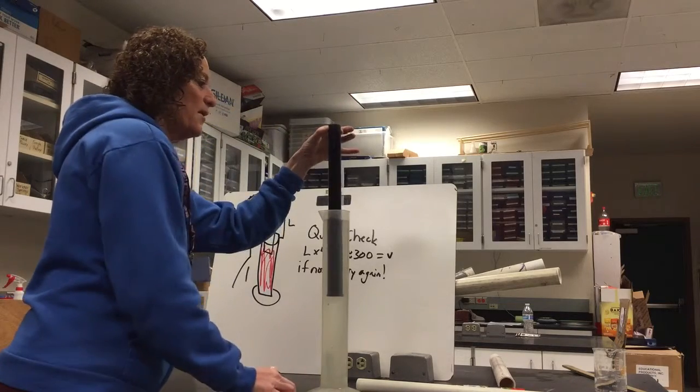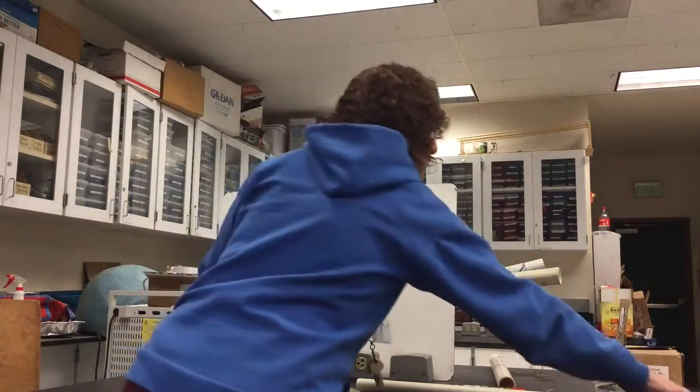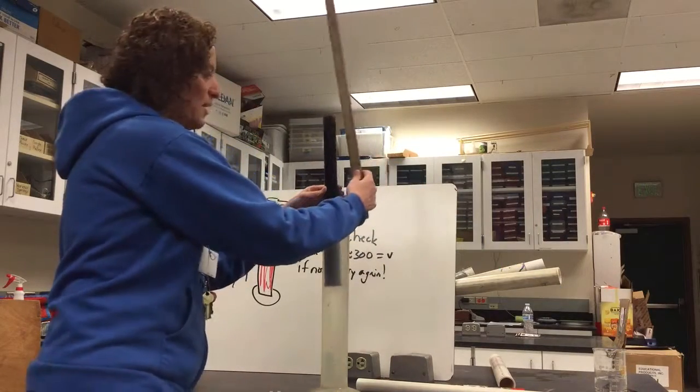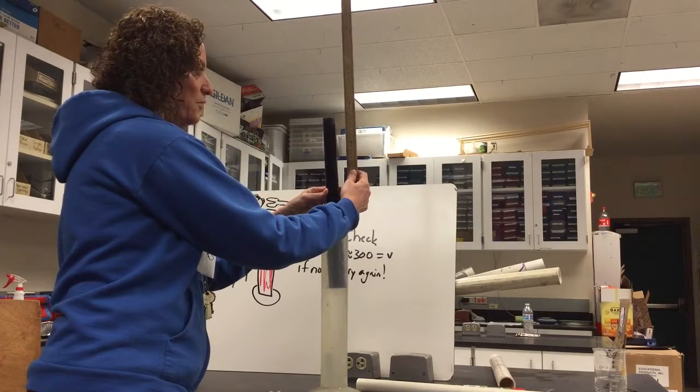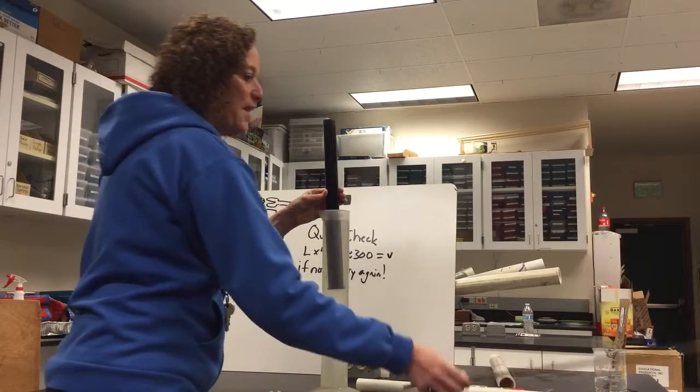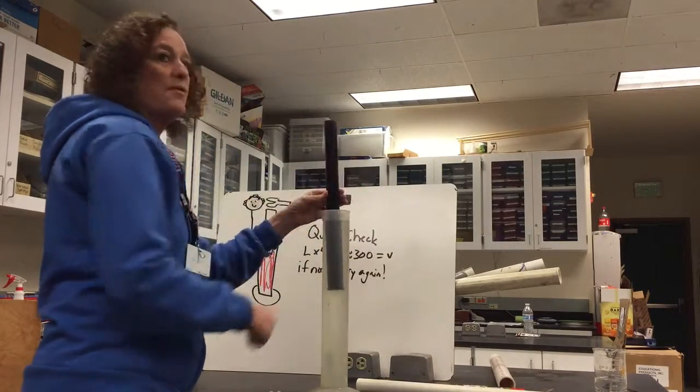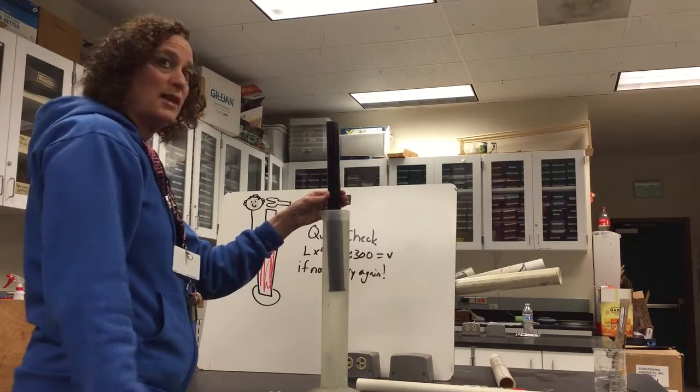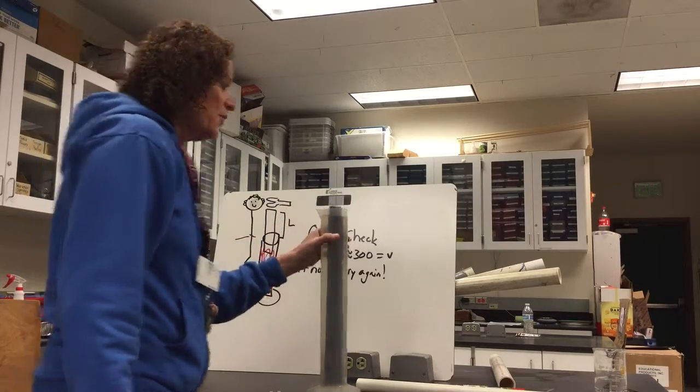As I hold this up, I need to measure the distance - this is when my partner comes in. I need to measure the distance from the water to the top of the tube. That's going to represent my resonance tube, the shortest length that gives me resonance.